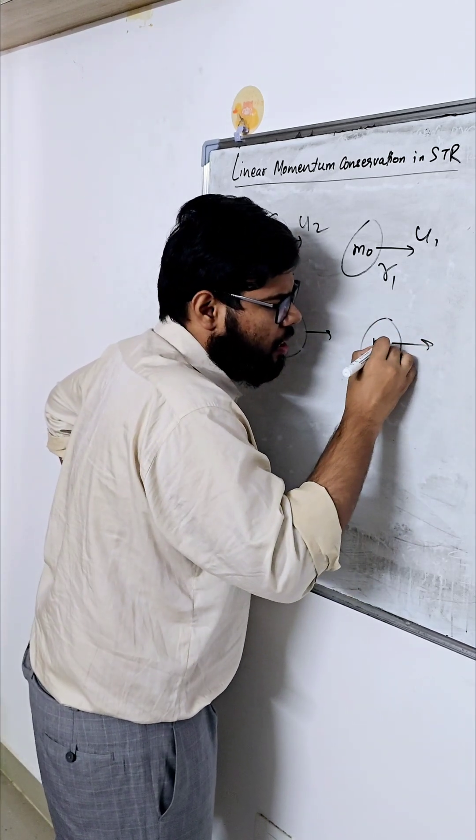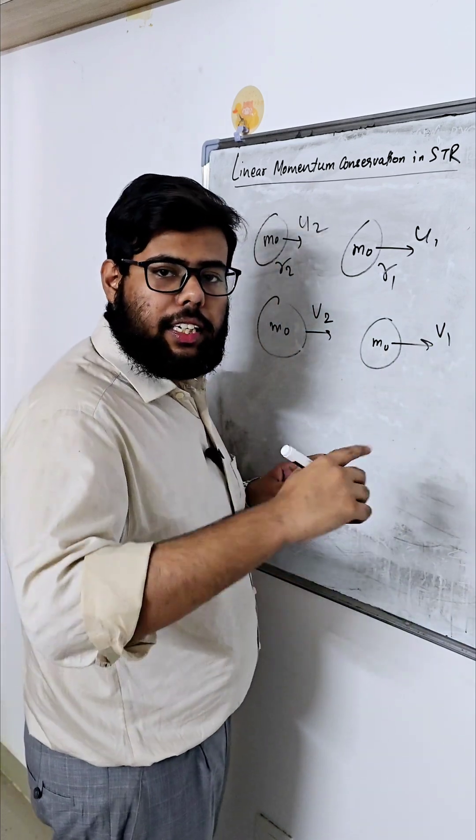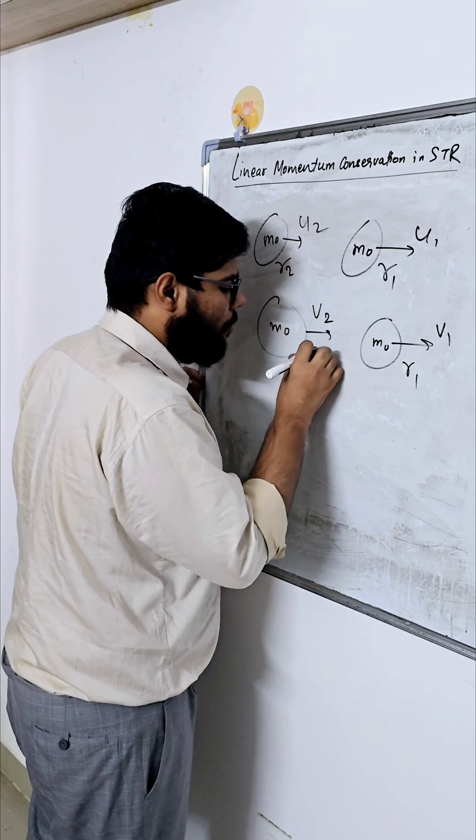And after collision, of course the rest mass is same. So it will move like this. Suppose this has a velocity V1 and this is velocity V2. And again they will have associated gamma, so it will be equal to gamma1 dash and gamma2 dash.